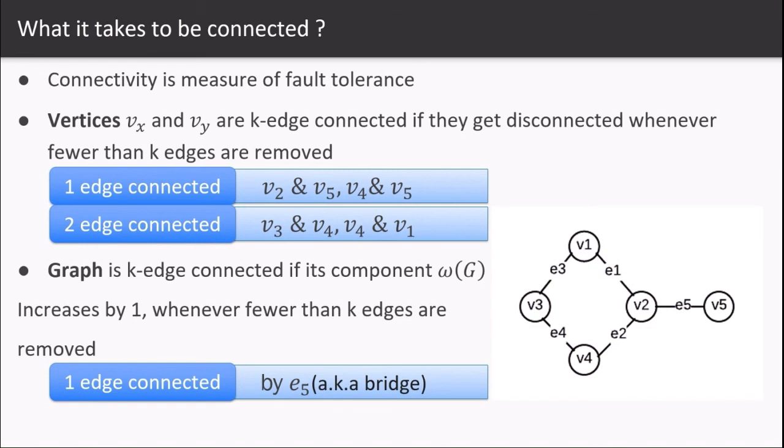So a given graph is one edge connected by e5. The edge e5 is also known as the bridge, which by removing, we will end up in two components of the graph.